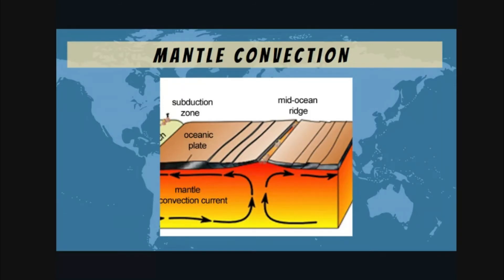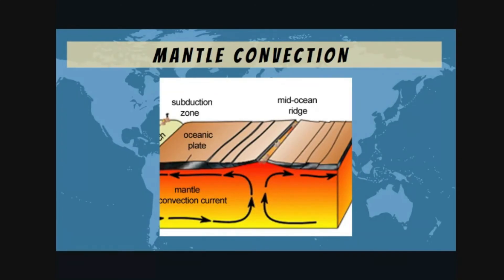At a divergent plate boundary, the convection cell on the left side follows counterclockwise direction while the convection cell on the right side follows clockwise direction, allowing the plates above them to move away from each other. This convection current produces two forces.